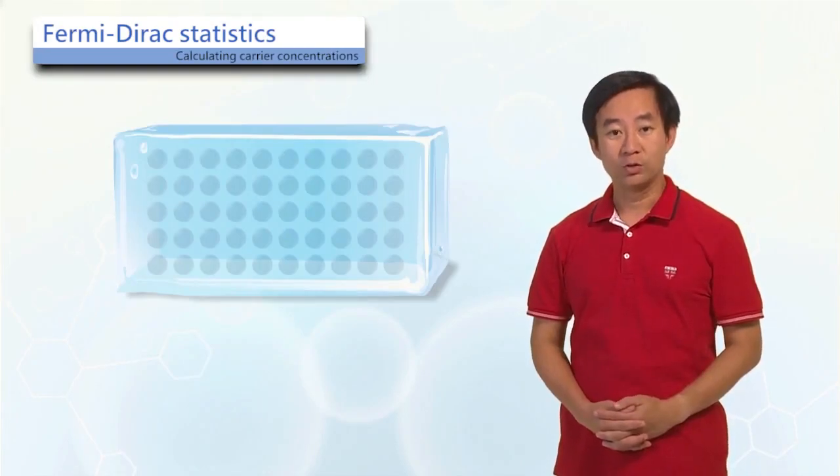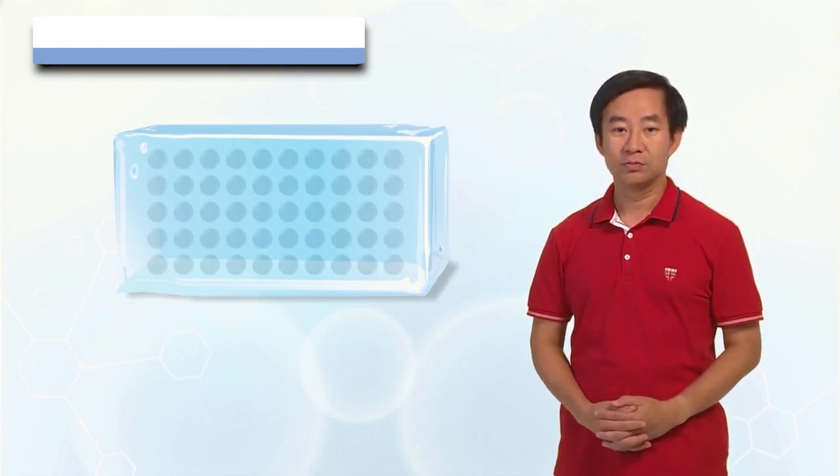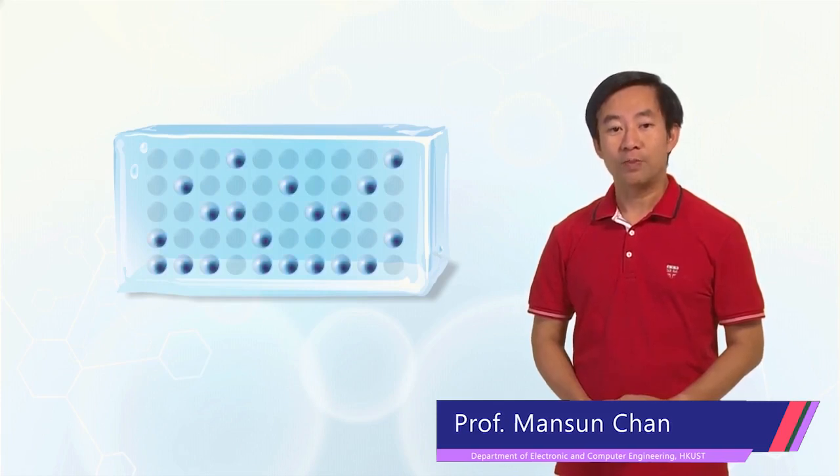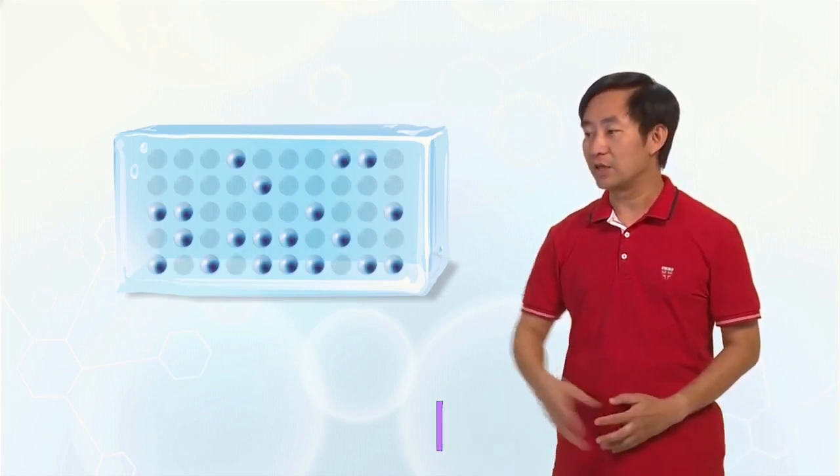Once the density of states is known, we will look at the behaviors of electrons in these states. Now assume that you are looking at an energy band with uniformly distributed states, which is partially filled with electrons inside a box.